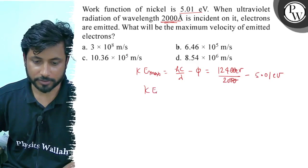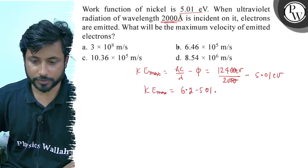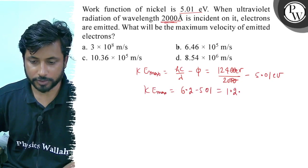K max equals 6.2 minus 5.01, so this will be 1.2 electron volts.